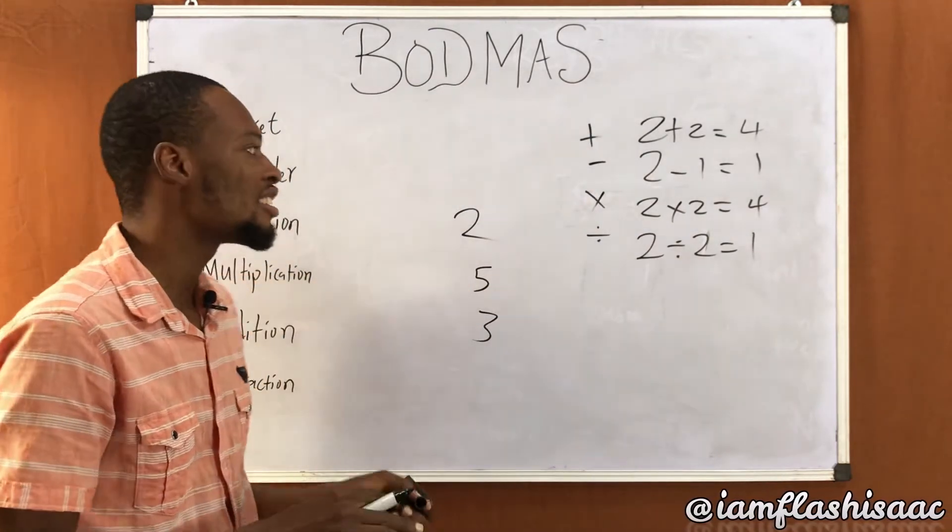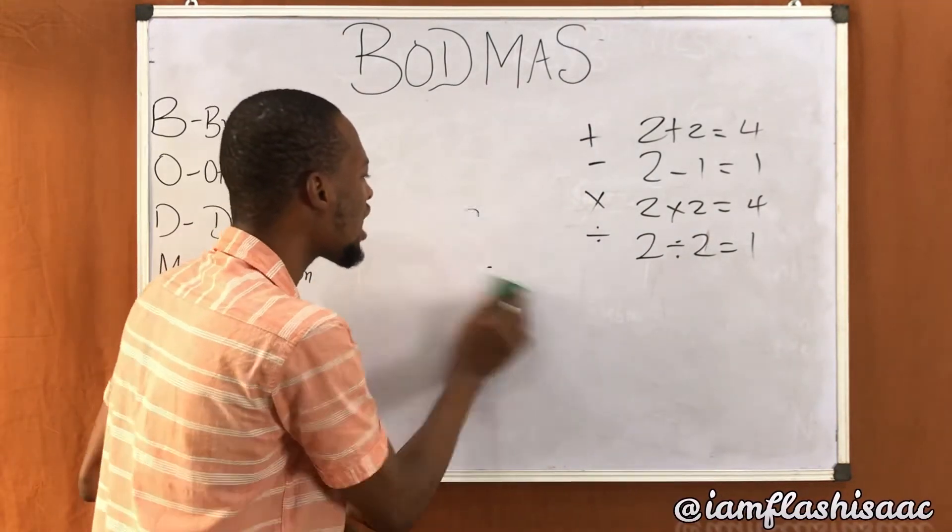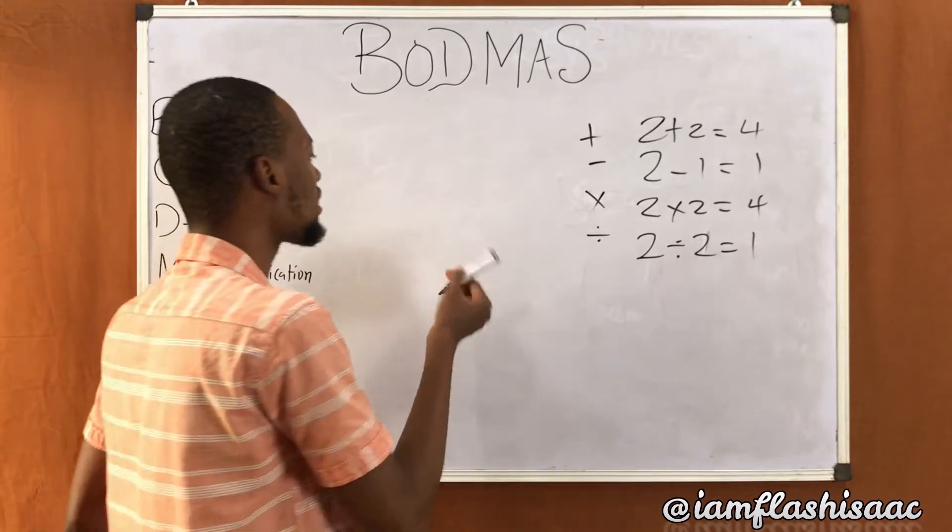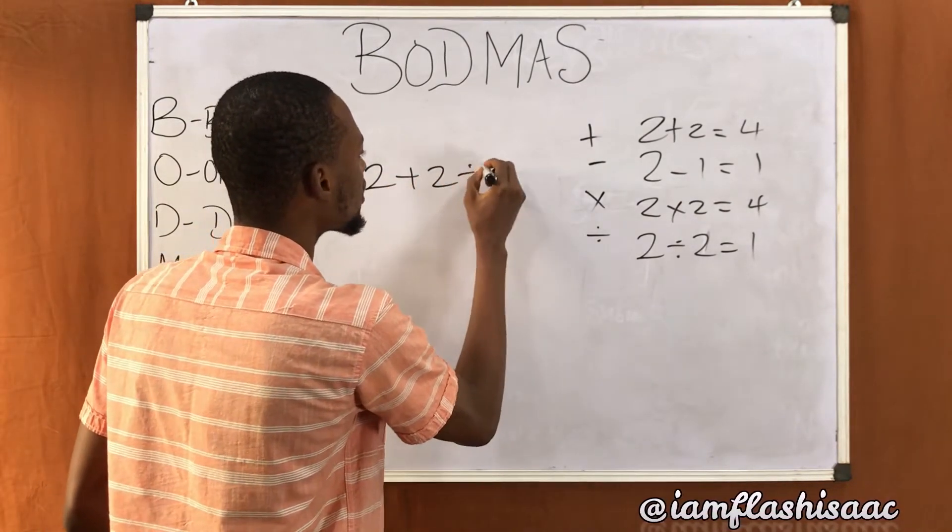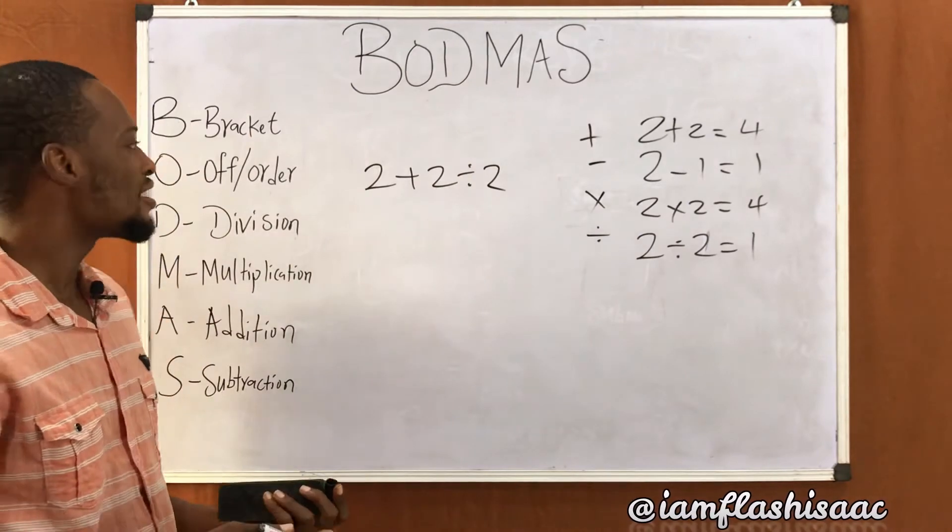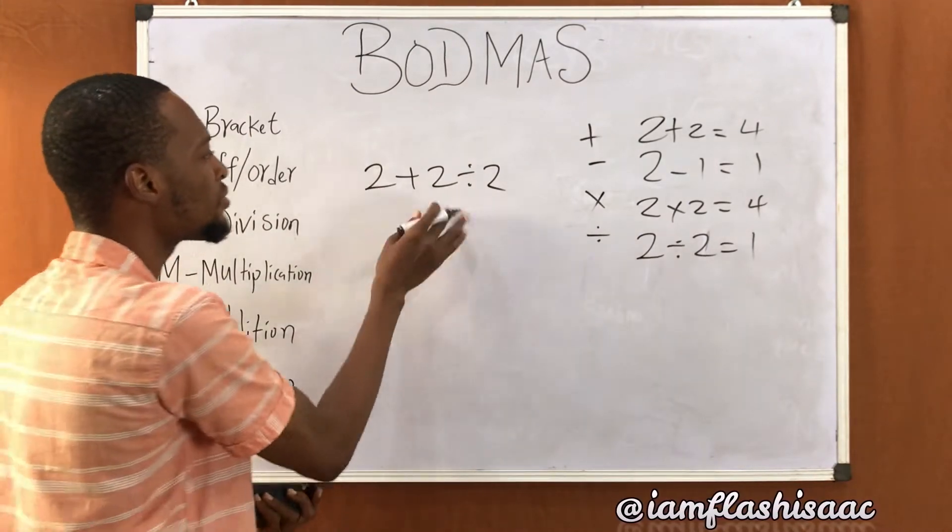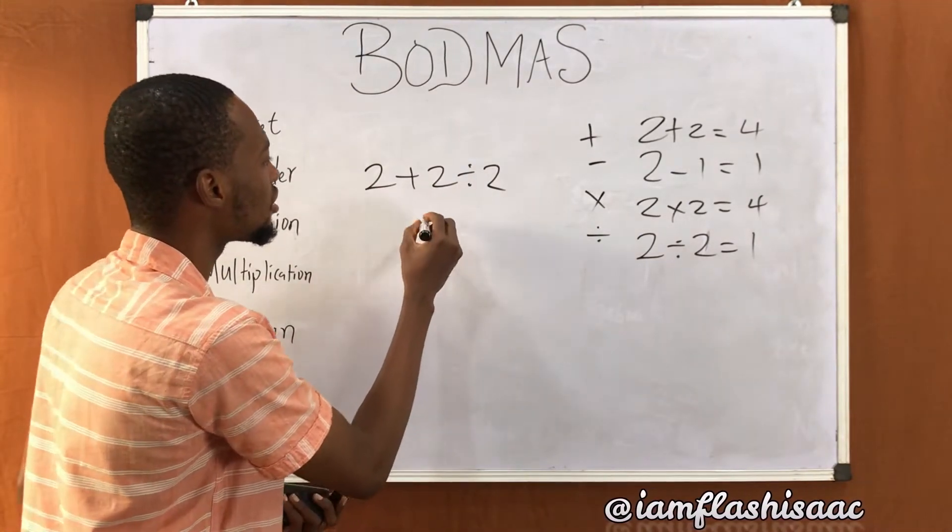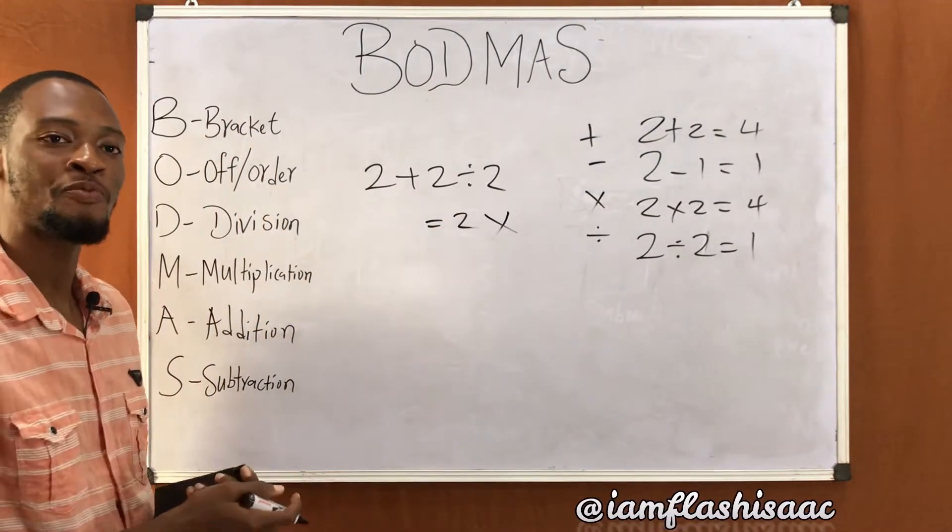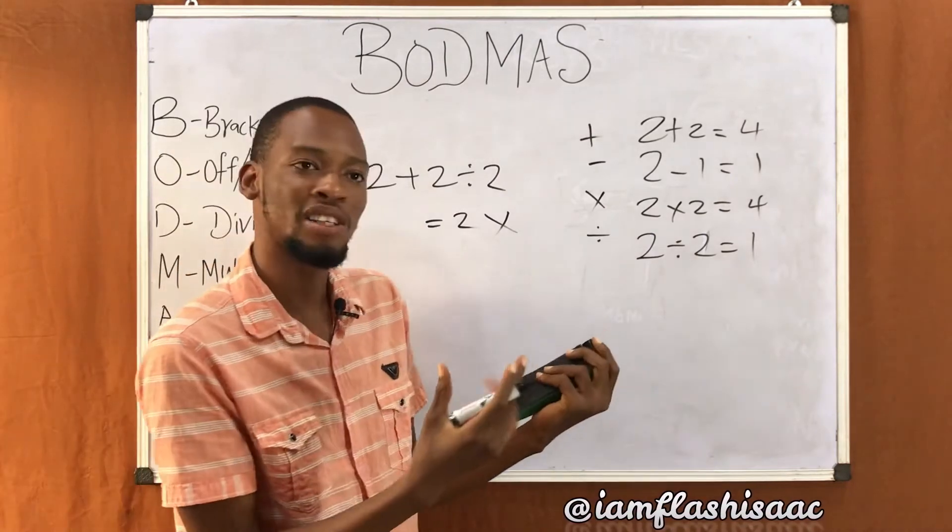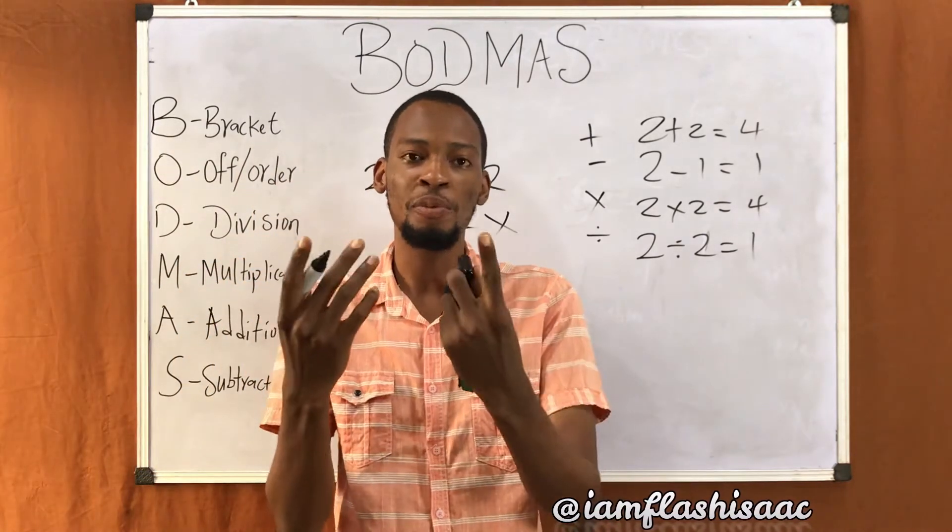How about something like this? If I give you something like this: two plus two divided by two. So by default you just quickly say two plus two is four, divided by two equals two. Wrong, that's not the answer. So when you are working with two numbers or using one operation it's very easy, but when it involves more than one operation it's no longer what you think.